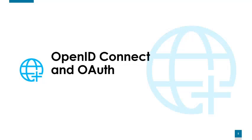OpenID Connect extends the OAuth 2.0 authorization protocol to use it as an authentication protocol, so you can do single sign-on using OAuth. OpenID Connect introduces the concept of an ID token — a security token that allows the client to verify the identity of the user and get basic profile information. Because OpenID Connect extends OAuth 2.0, apps can securely acquire access tokens which can be used to access resources secured by an authorization server.